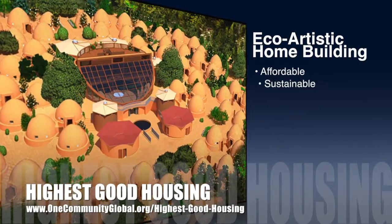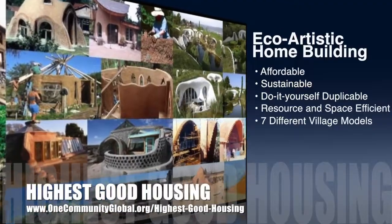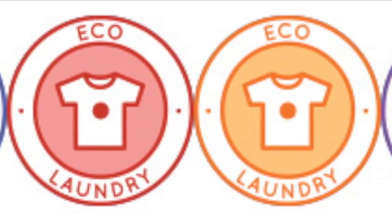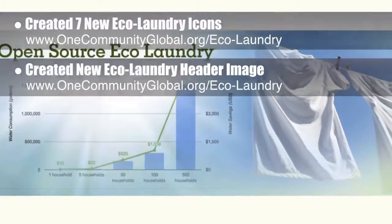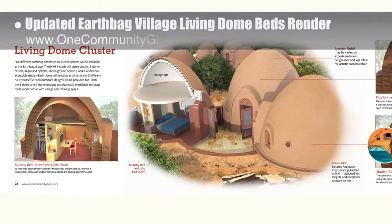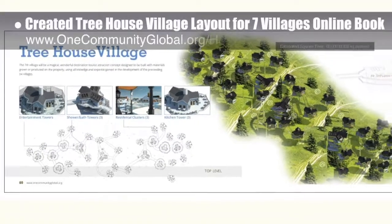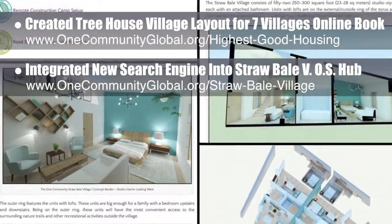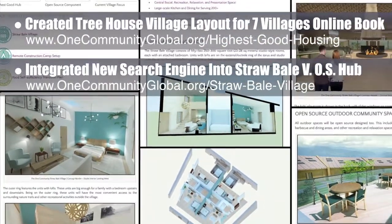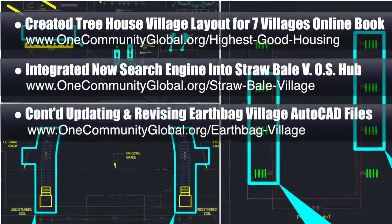One Community's approach to highest good housing is eco-artistic home building that is affordable, sustainable, do-it-yourself, duplicable, resource and space efficient, and consists of seven different sustainably constructed village models. This week the core team created seven new eco-laundry icons and a new eco-laundry header image. We also updated the earthbag village living dome beds render, created a new earthbag village furniture header, and created a new treehouse village layout for the seven villages online book. We also integrated a new search engine into the straw bale village open source hub and updated that page with a new table of contents, new formatting, and complete descriptions and introductions for all photo sections.